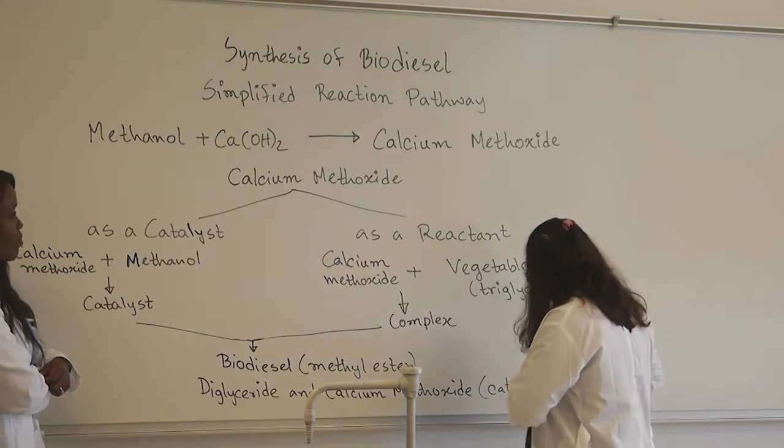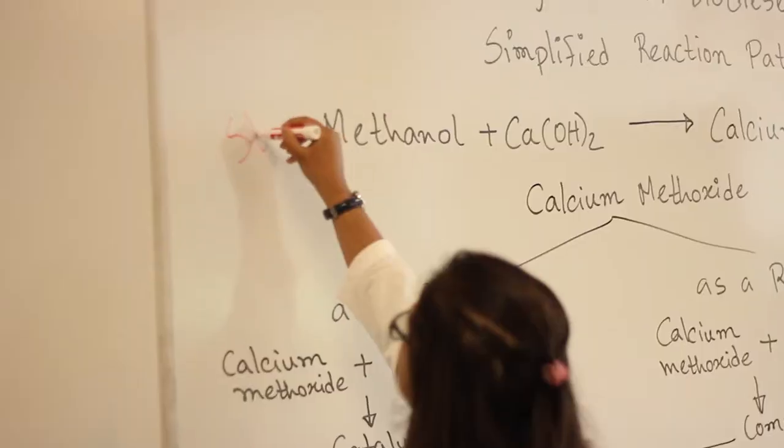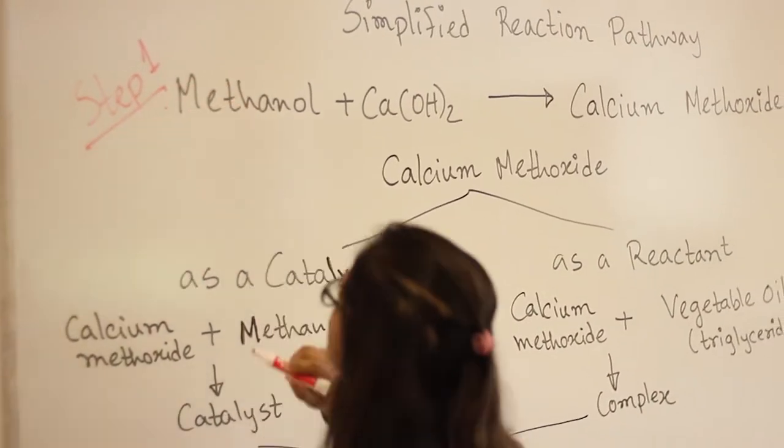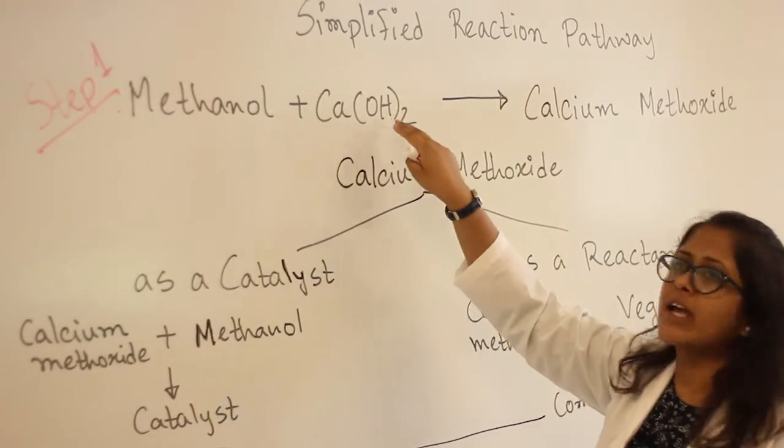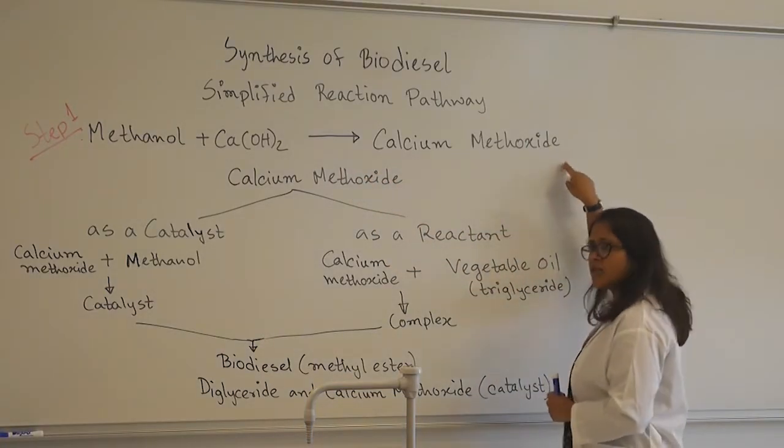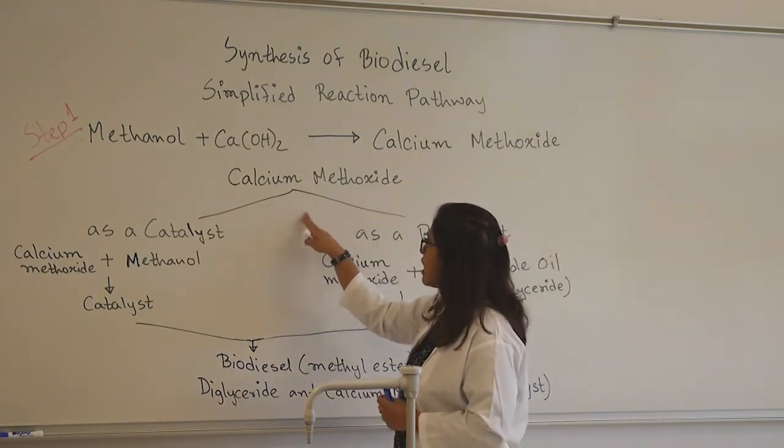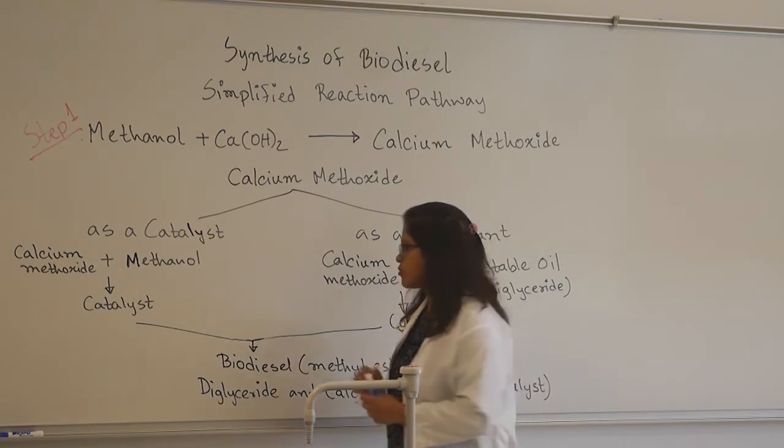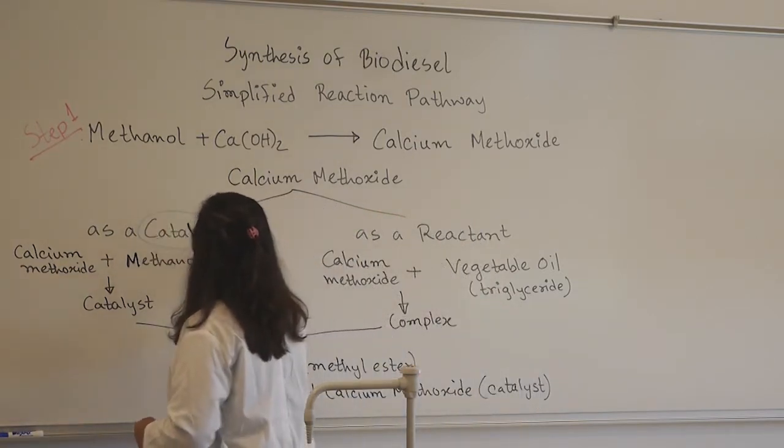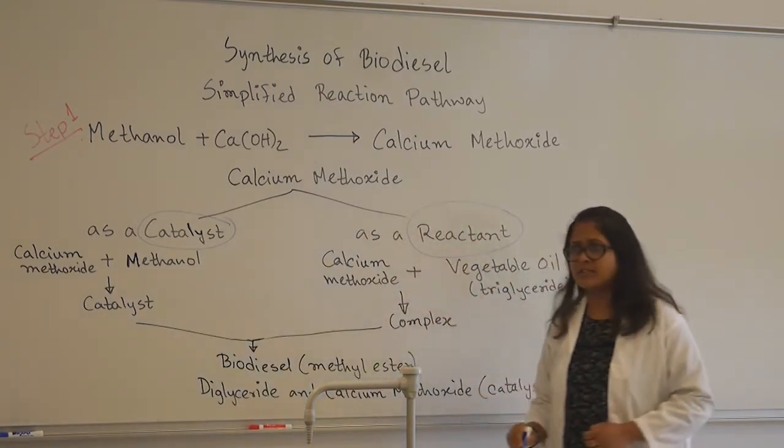So in the first step of the reaction, step one, methanol reacts with calcium hydroxide and produces calcium methoxide. Calcium methoxide in this reaction pathway has two very important roles. One will be as a catalyst and another one will be as a reactant.